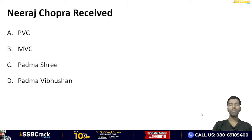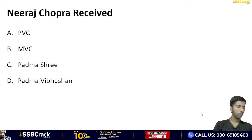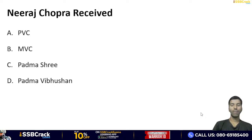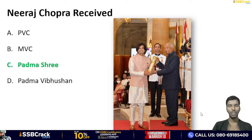Neeraj Chopra received — Param Vir Chakra, Maha Vir Chakra, Padma Shri, ya Padma Vibhushan? And the correct answer is option C — Padma Shri. Yeh unhe kal Rashtrapati Bhavan mein Mahamahim Rashtrapati ke dwara diya gaya.